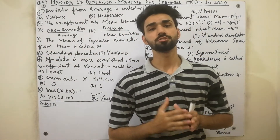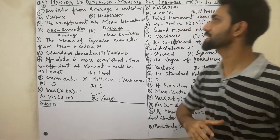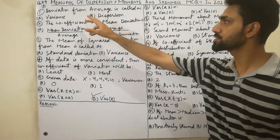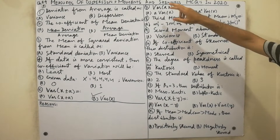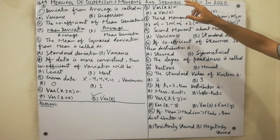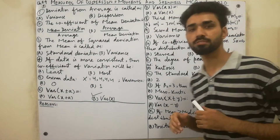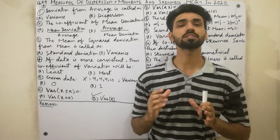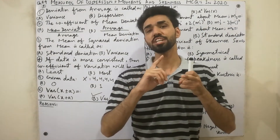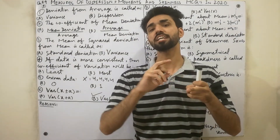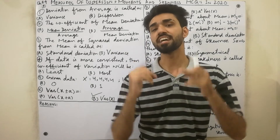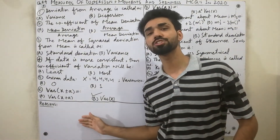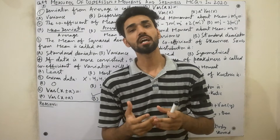Assalamu Alaikum dear friends. Today I am here to explain Chapter Number Four: Measures of Dispersion. I will also cover MCQs from 2020 that are very important for you. I will tell you the reasons and solutions for each MCQ.